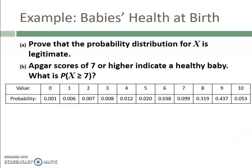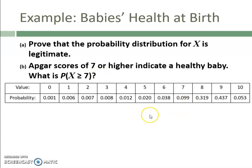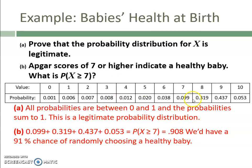Let's look at an example about a baby's health at birth. We want to prove this is a legitimate probability distribution. These values are APGAR scores — a score assigned to a baby at birth based on appearance, sound, and overall health. All probabilities are between zero and one and they sum to one, making it a legitimate distribution. If APGAR scores of seven or higher indicate a healthy baby, we add up probabilities for 7, 8, 9, and 10 — giving about a 91% chance of randomly choosing a healthy baby.